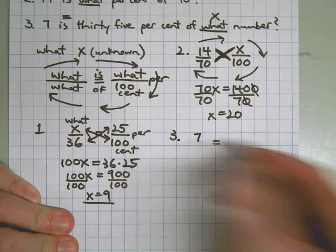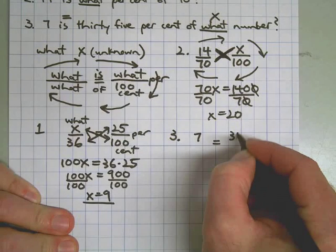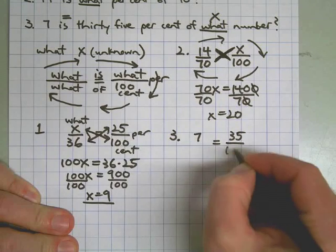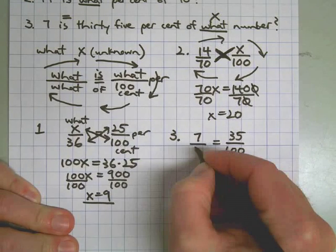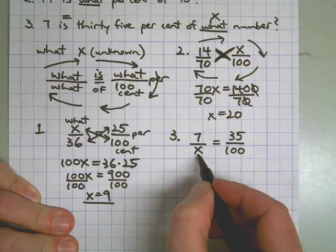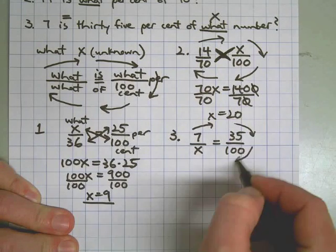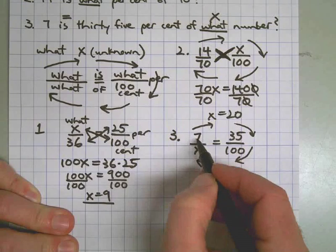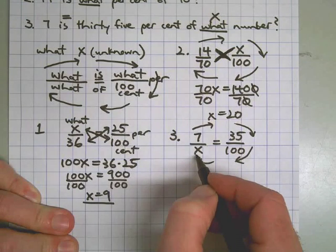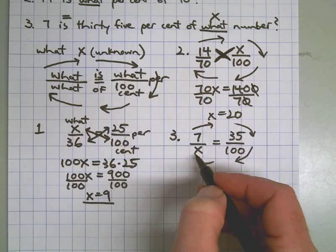Seven is 35 percent of what number? There's the what right there. It came last in our circle. Going around this way, just like a clock. So the what came at the end. Therefore, it goes as the denominator in the first ratio.